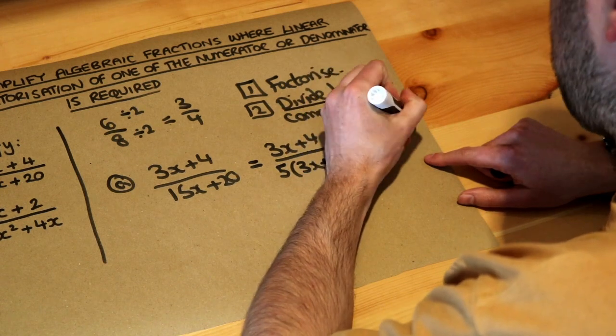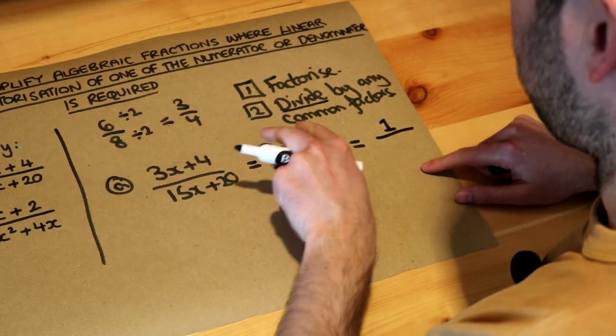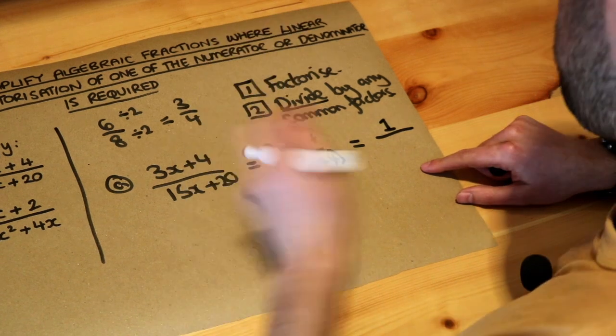So if you divide the top by 3x plus 4, 3x plus 4 divided by 3x plus 4, anything divided by itself is 1. If I had 10 divided by 10, that's 1. 5 divided by 5 is 1. 3x plus 4 divided by 3x plus 4 is 1.